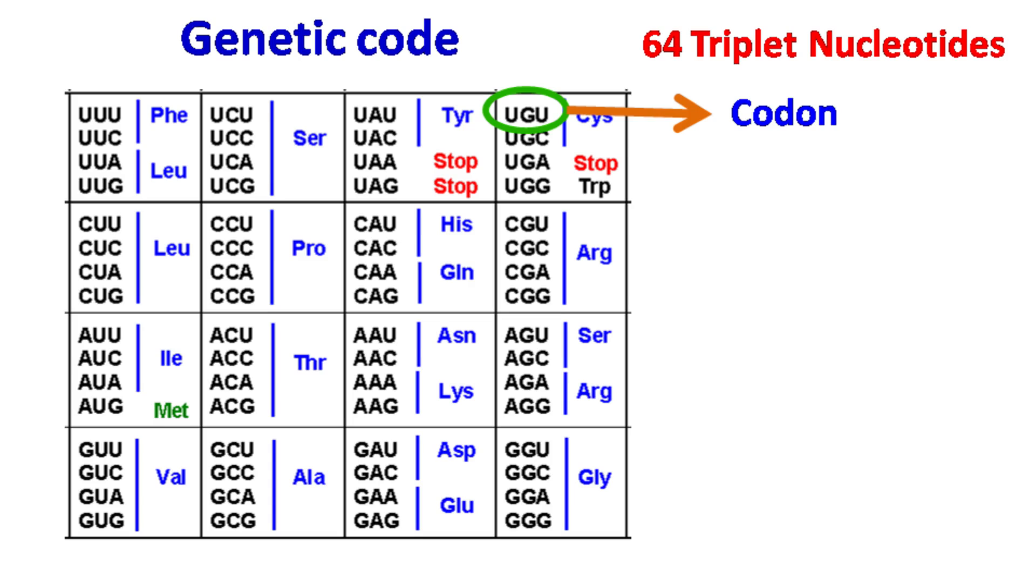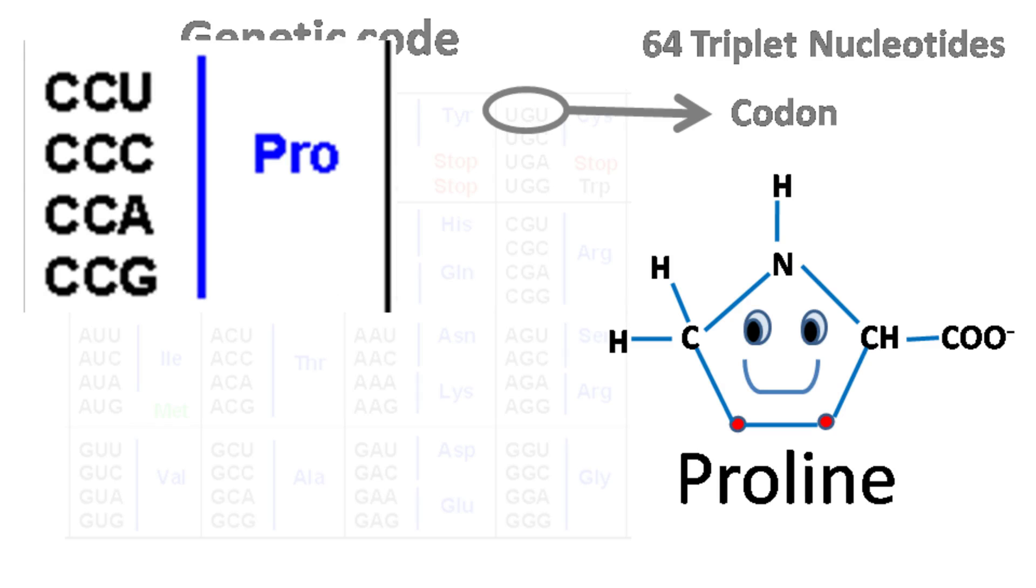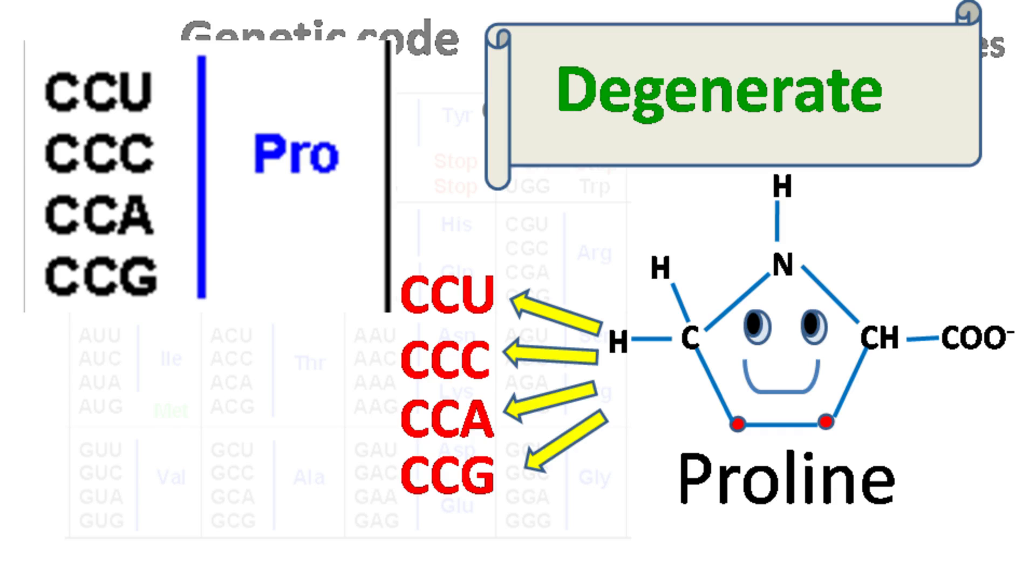Now, as there are 64 codons and only 20 amino acids, a single amino acid can be coded by more than one codon. This property of genetic code is known as degeneracy. For example, amino acid proline can be coded by CCU, CCC, CCA, and CCG.